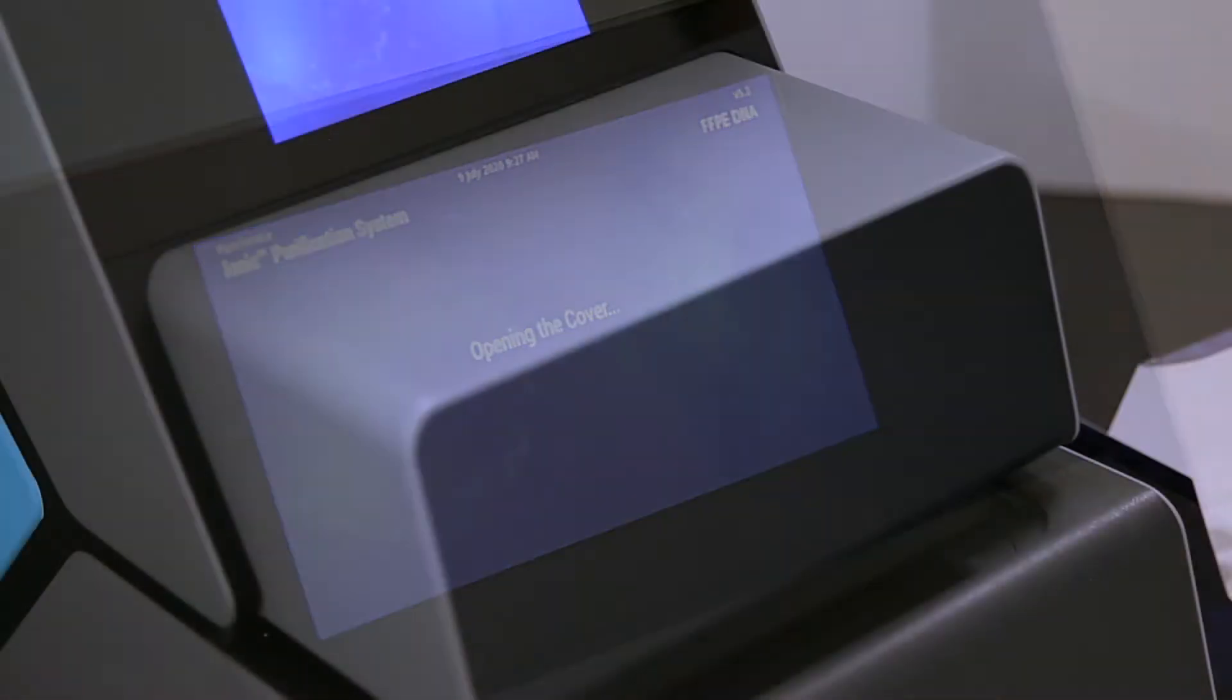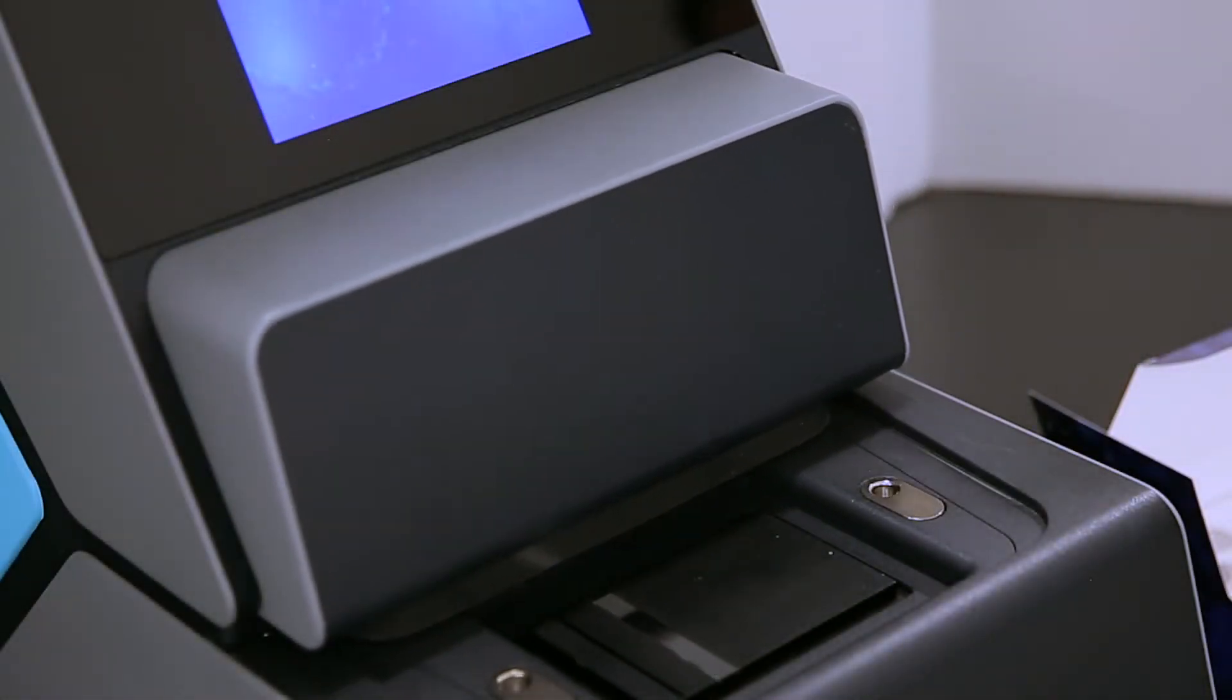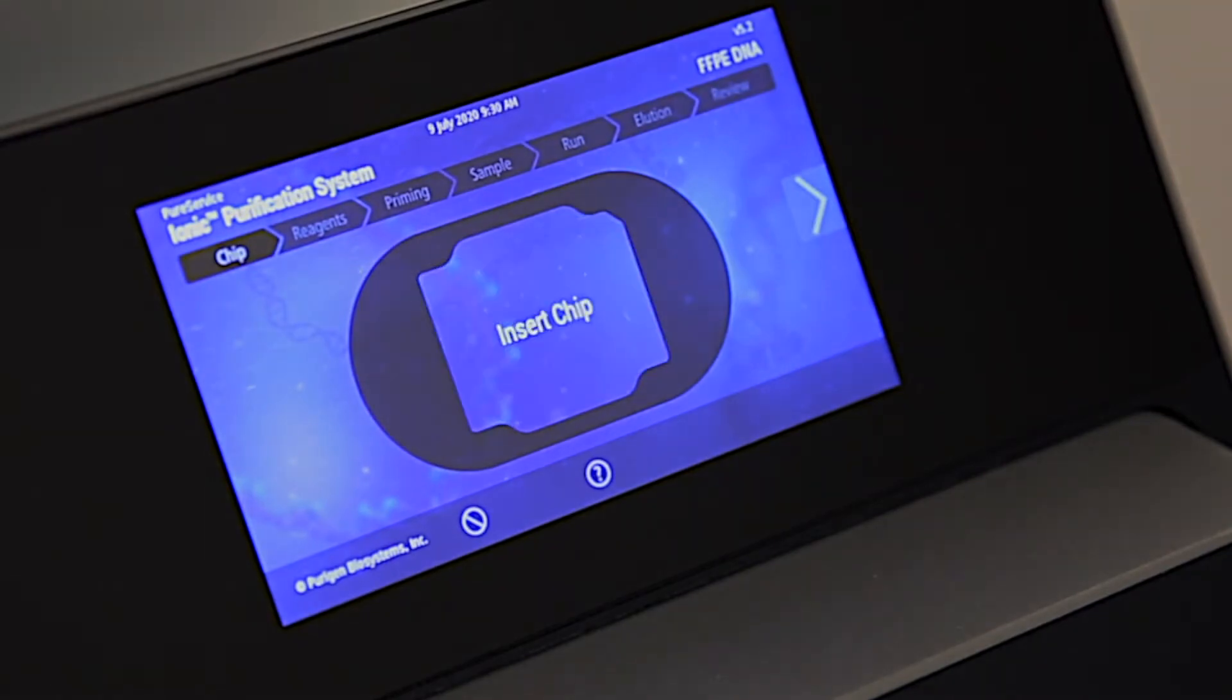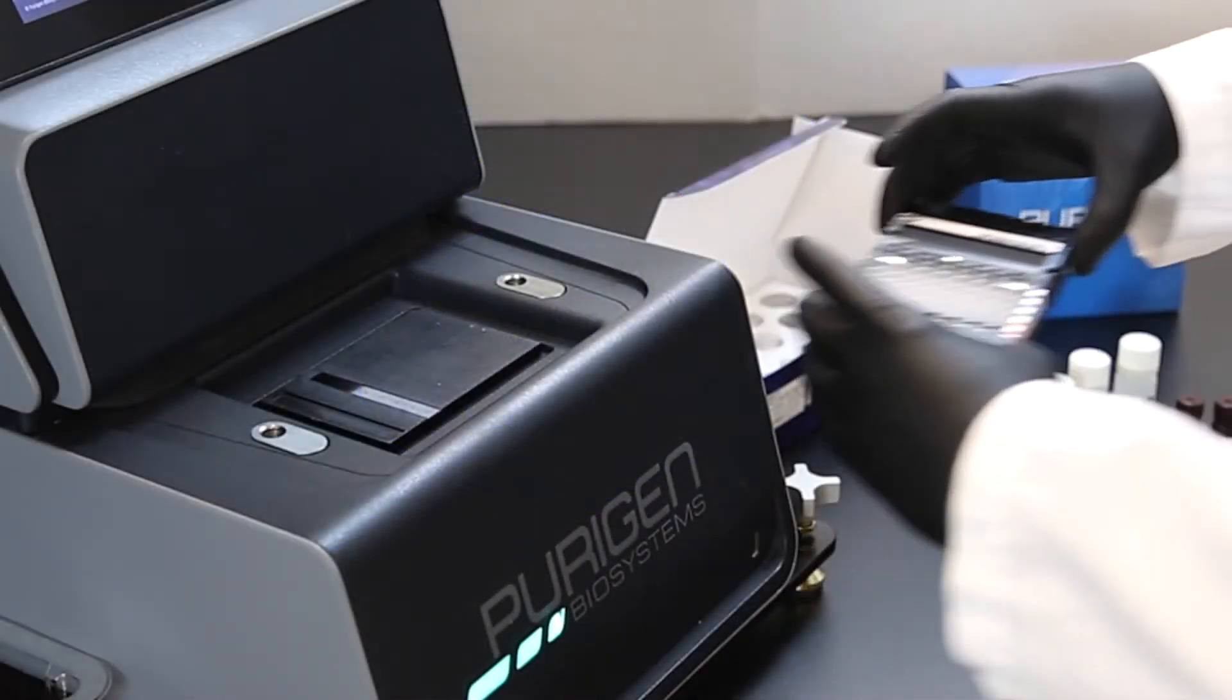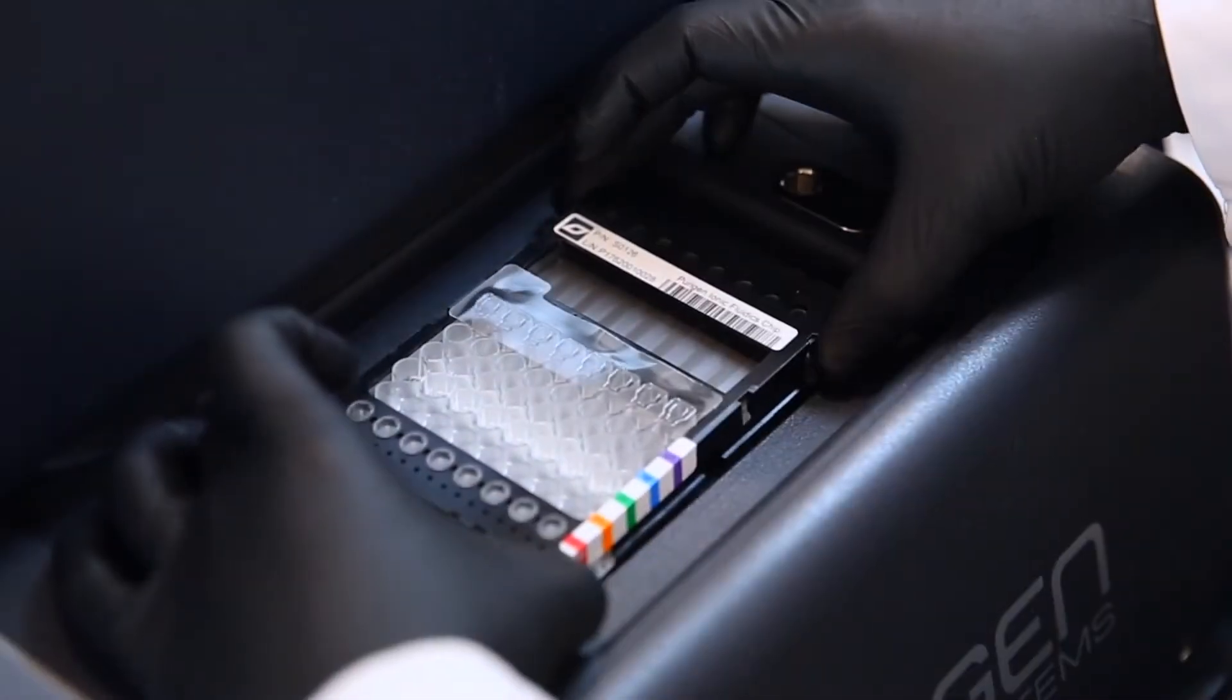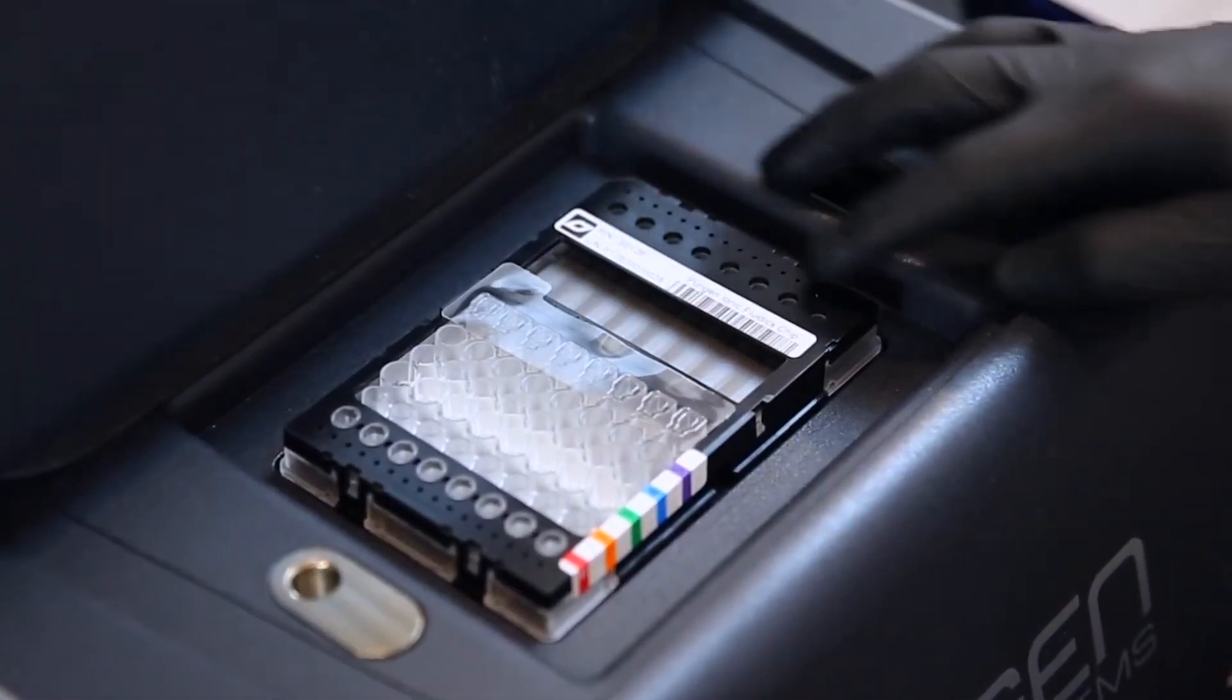After the cover opens, a message on the touch screen requests that a new fluidic chip is inserted into the holder. The fluidic chip is placed with the notched corner aligned with the upper right corner of the holder and gently pressed into position.